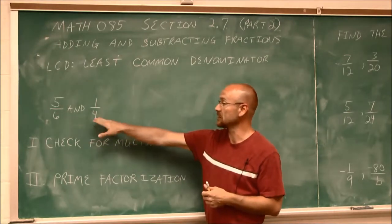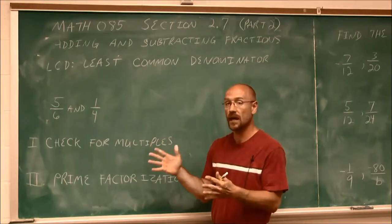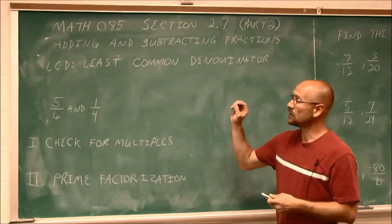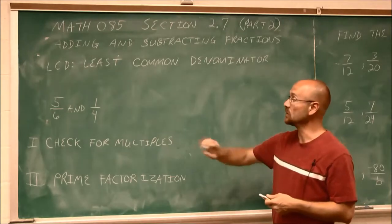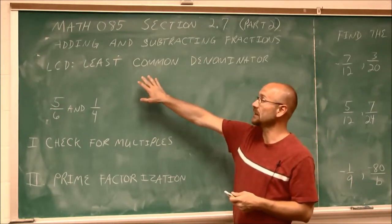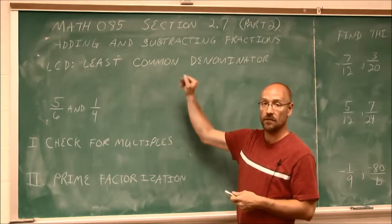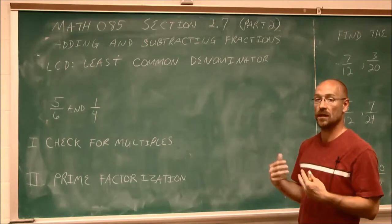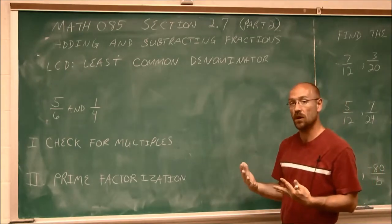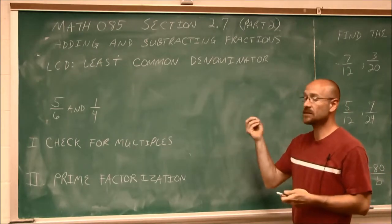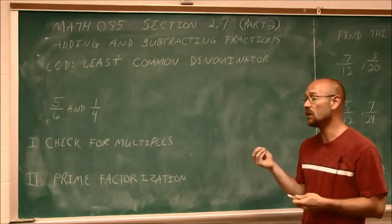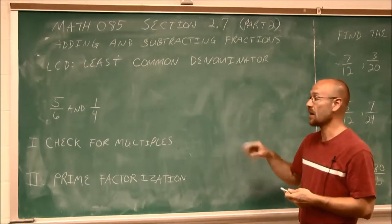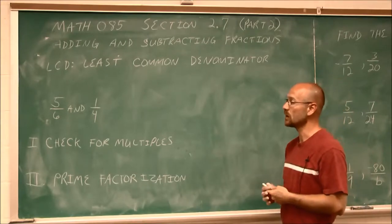In this example, we have 6 and 4 — the denominators are different. The tool we're going to use is called the least common denominator. If you recall from a previous video, we talked about least common multiples; it's the same tool, but now we're going to find an application for it.